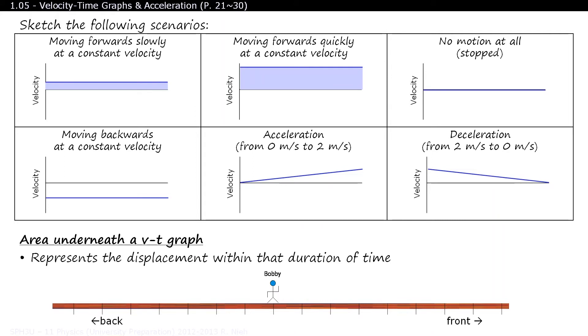Alright Bobby, break time's over. This time, walk backwards. You'll notice the rectangle is now formed underneath the time axis. In fact, mathematically, this creates a negative area. A negative velocity times a positive time value equals a negative surface area. So whenever you walk backwards, you create a negative displacement.